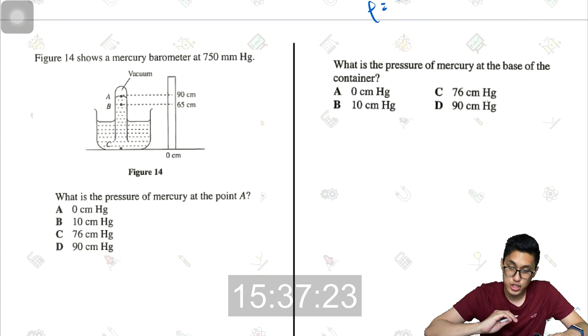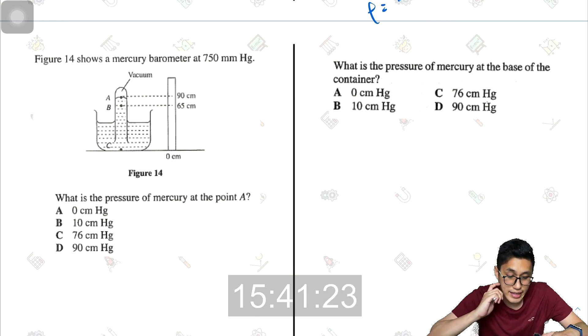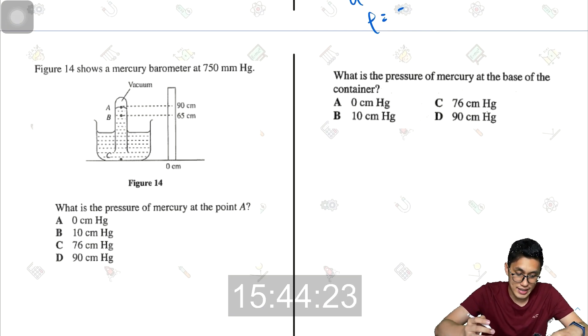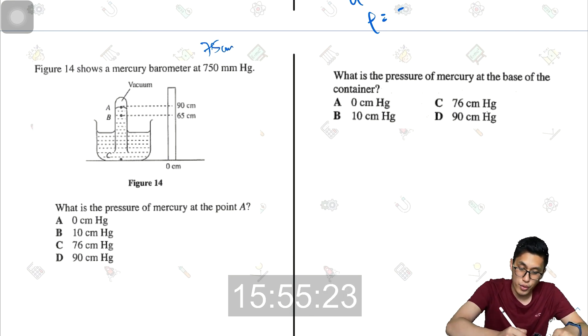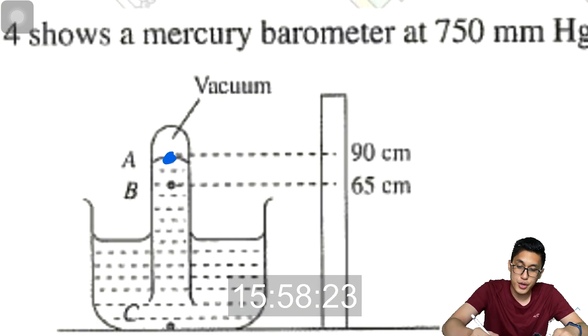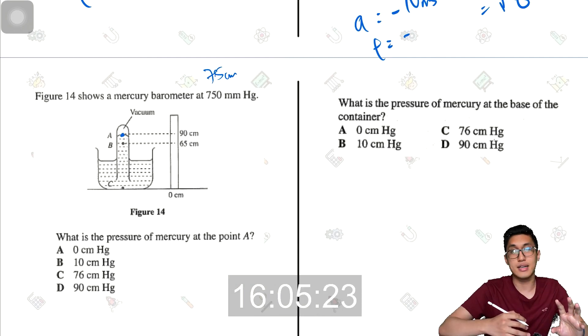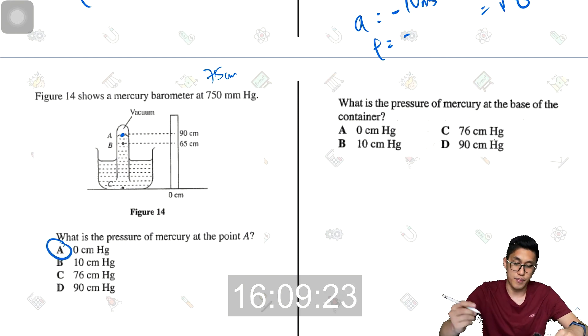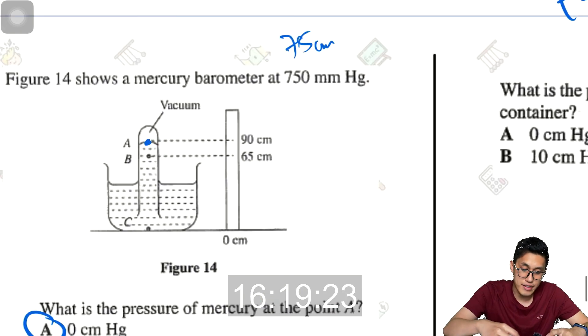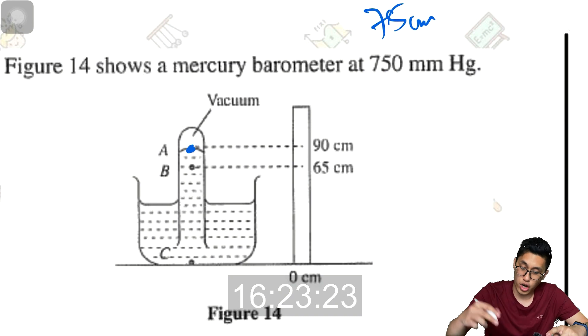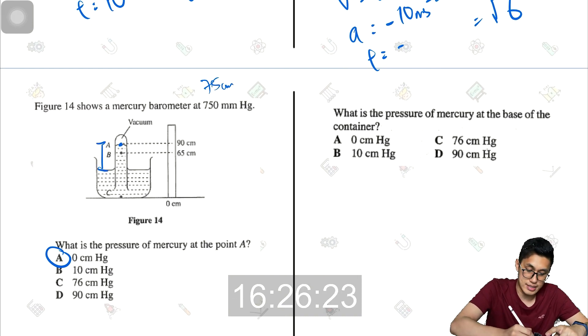Next, figure 14 shows a mercury barometer at 750 mm Hg. So the height here is 750 mm, which is 75 cm. What is the pressure of mercury at point A? So the pressure of mercury at point A, because there is no mercury actually pressing down on point A, so the pressure of mercury would be zero. It is only feeling the gas pressure instead of the mercury pressure. So the pressure of mercury is zero.